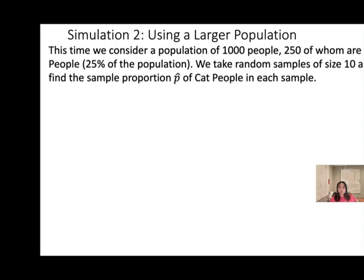Let's see here — this time we'll be using a larger population. The same experiment, but now we consider our population to be 1,000 people instead of 8. 250 are cat people, so the population proportion is still 25%. This time we randomly pick a sample of 10 — before we only picked 4. We find the sample proportion of cat people in each sample.